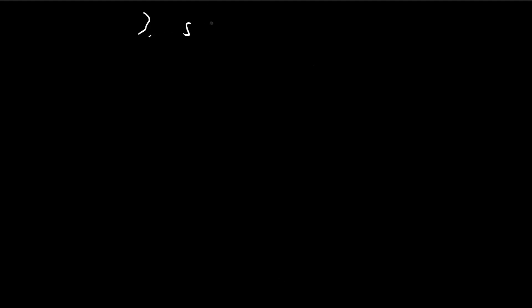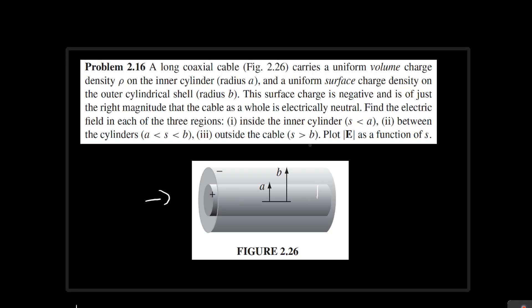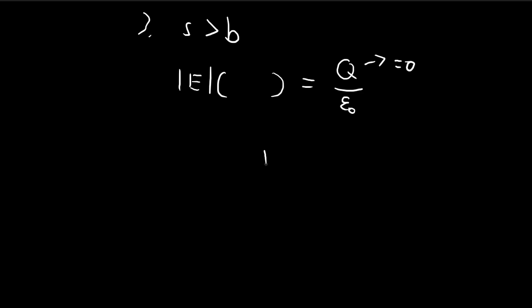For the third case, when s is larger than b, we apply the same argument, but now the charge enclosed is equal to zero. Looking at the diagram, there is a surface with negative charge distributed such that it cancels all the positive charge inside — the total negative charge equals the total positive charge inside. So for any surface larger than b, the total enclosed charge is zero, and the electric field outside is zero.